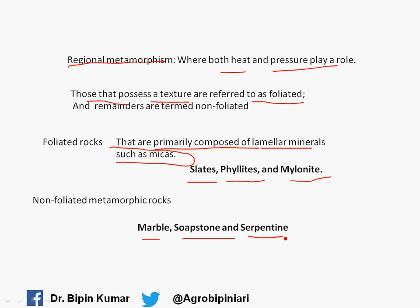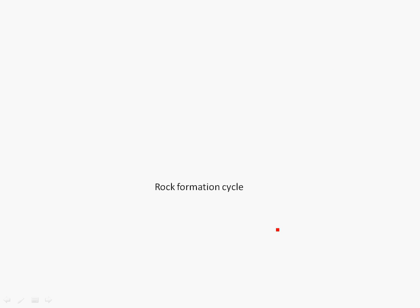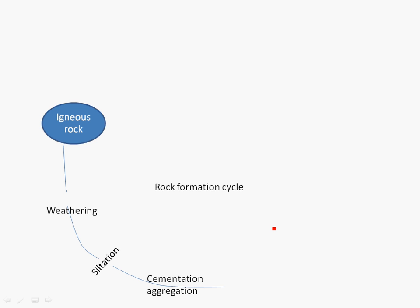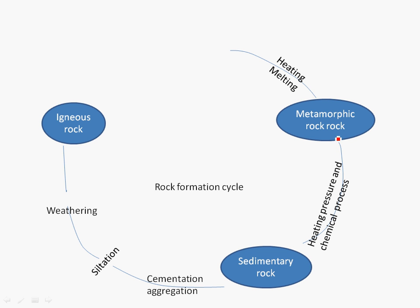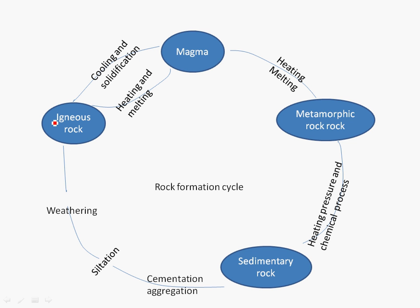To summarize through the rock formation cycle: igneous rocks, after weathering, undergo sedimentation and cementation to form sedimentary rocks. Sedimentary rocks, under heat, pressure, and chemical processes, form metamorphic rocks. Metamorphic rocks, through heating and melting, form magma, which again cools and solidifies to form igneous rocks. Additionally, igneous rocks can directly convert into metamorphic rocks if temperature and pressure play an important role, and weathered material can also directly become metamorphic rocks.